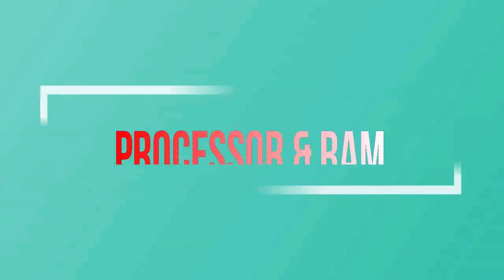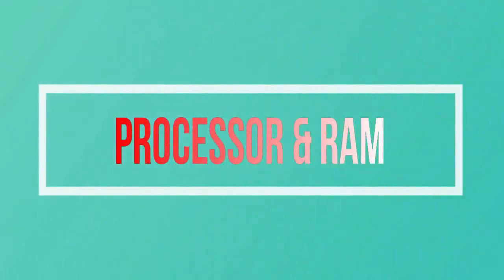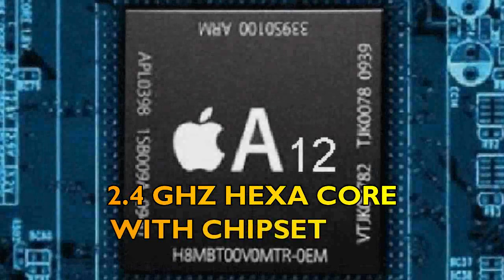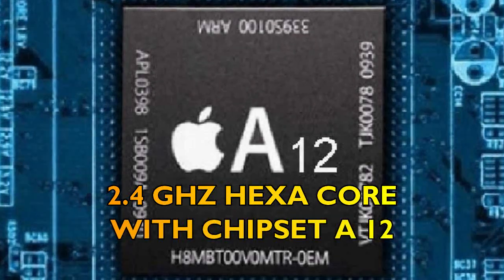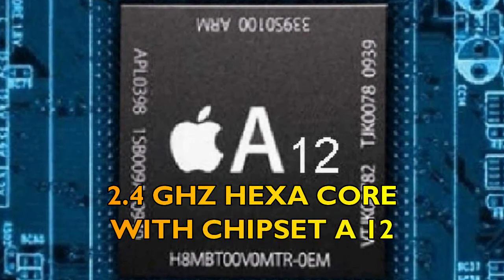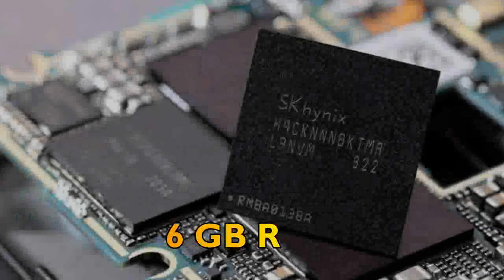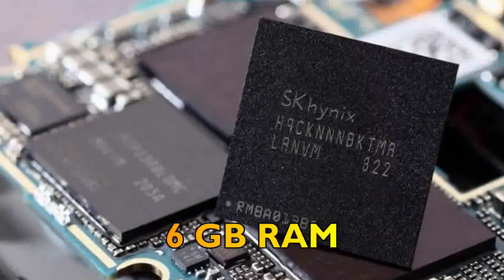Thirdly, let's talk about the processor and RAM of iPhone 9 Plus. The processor is going to be a 2.4 GHz hexa-core Apple Bionic 12, and the RAM will be 6 GB.